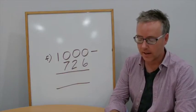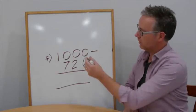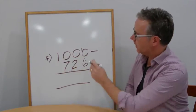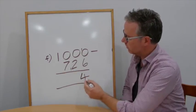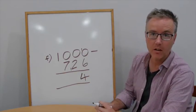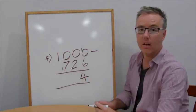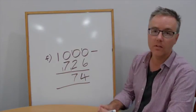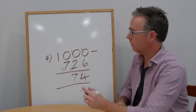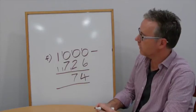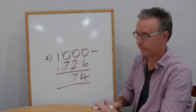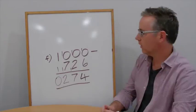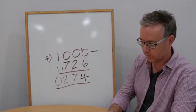Question F: 1000 take away 726. 0 take away 6, we can't do. Add 10, add 10. 10 take away 6 is 4. 0 take away 3, can't do. Add 10, add 10. 10 take away 3 is 7. 0 take away 8, can't do. Add 10, add 10. 10 take away 8 is 2. 1 take away 1 is 0. Answer: 274. Check your estimate.